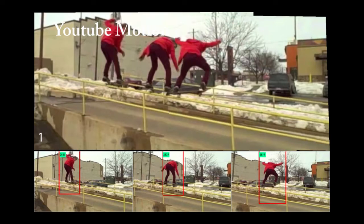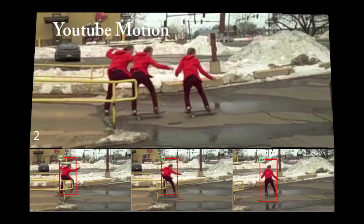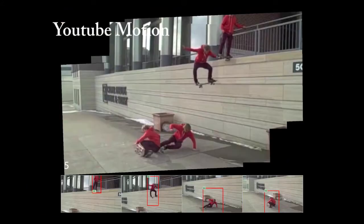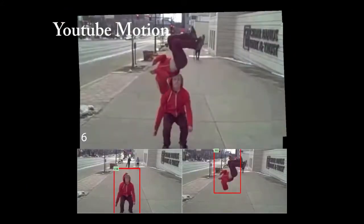At the bottom row, we show the selected frames overlaid with the person hypotheses indicated by the red bounding boxes and the frame indices. Now we show more montages following the order ranked by the montageability scores.